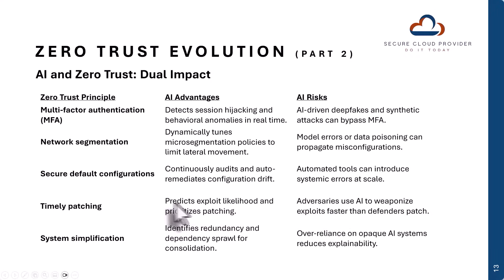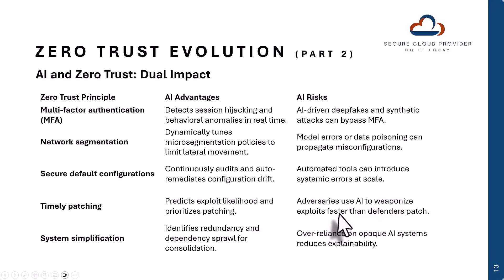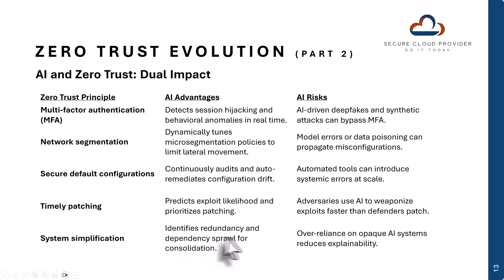When it comes to timely patching, there's also concern about how adversaries are going to use AI to weaponize exploits. Yes, you can use AI to predict exploit likelihood and to prioritize your patching. However, adversaries can use those same AI capabilities to weaponize those exploits — probably faster than you're going to be able to patch. That's a risk that AI introduces. When it comes to system simplification, AI is great for identifying redundancy and dependency sprawl for consolidation, and that is a big win. A simplified and streamlined system is absolutely paramount for good security.